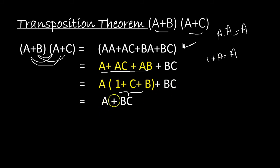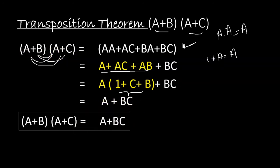A times 1, which we write as A, plus BC. So the solution of (A+B)(A+C) equals A + BC. This is what the transposition theorem states.